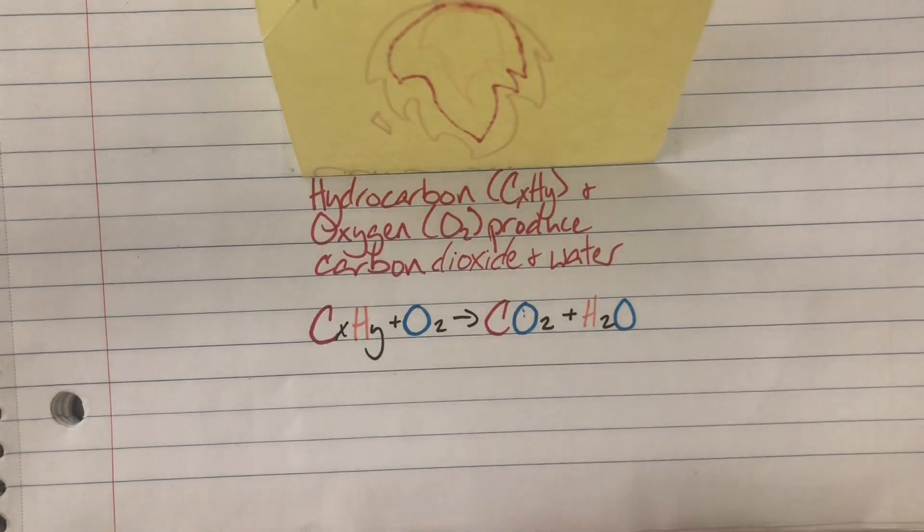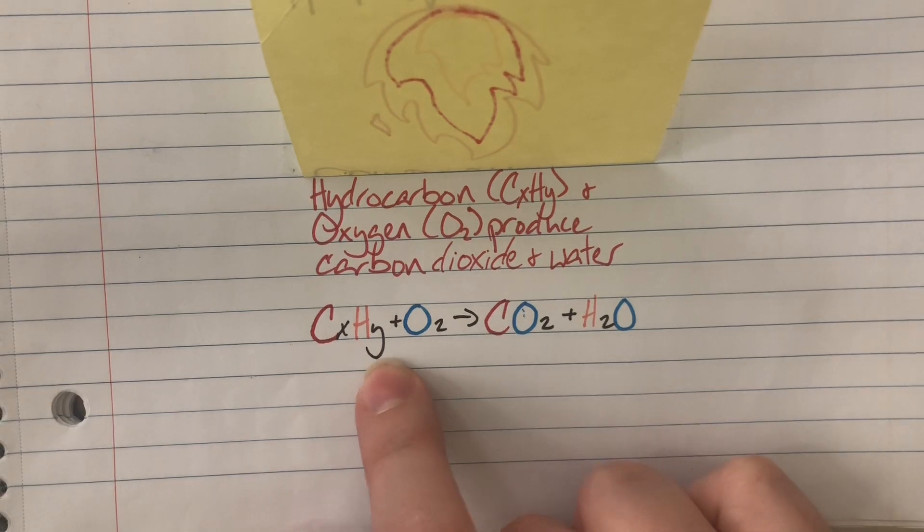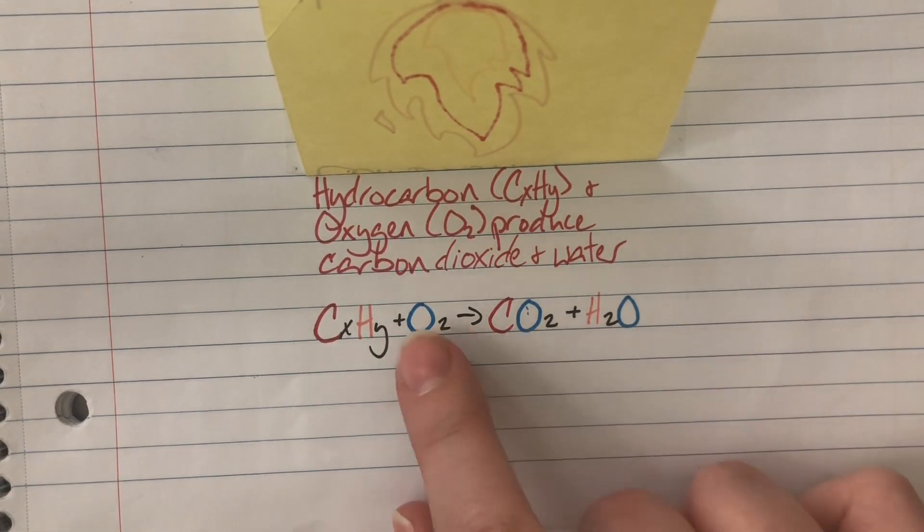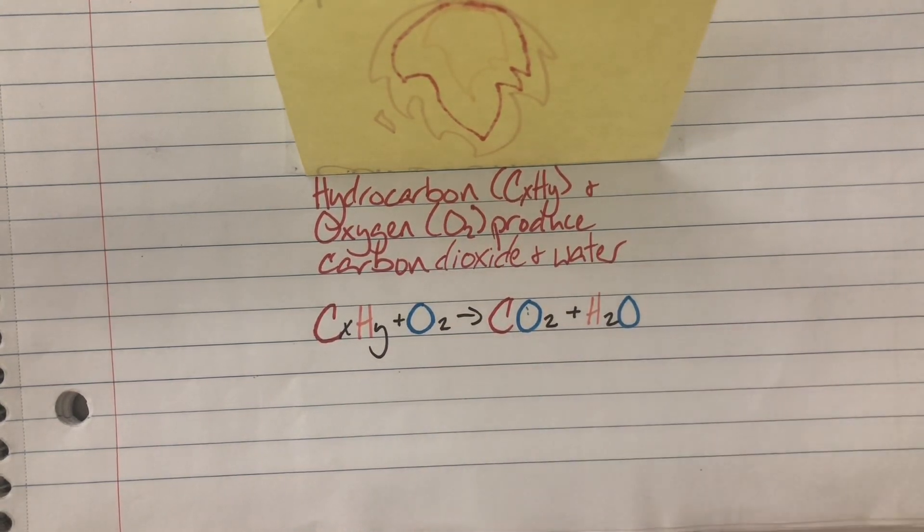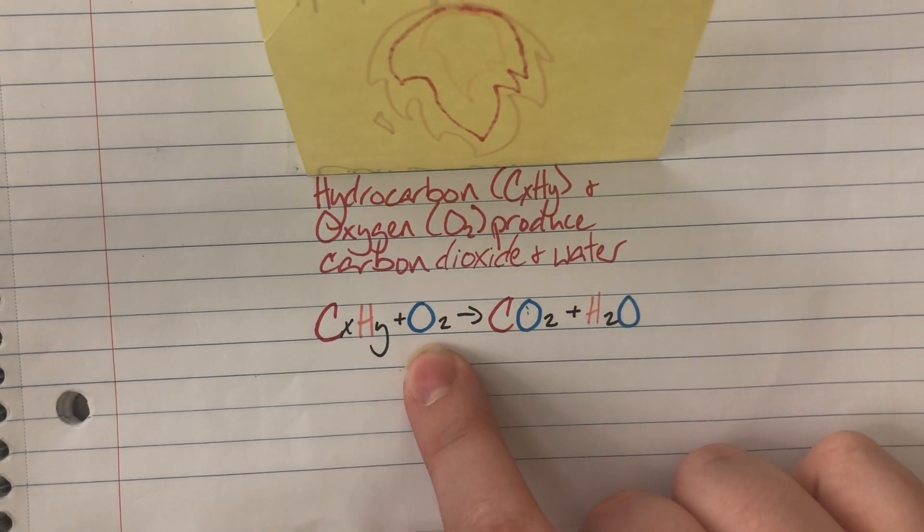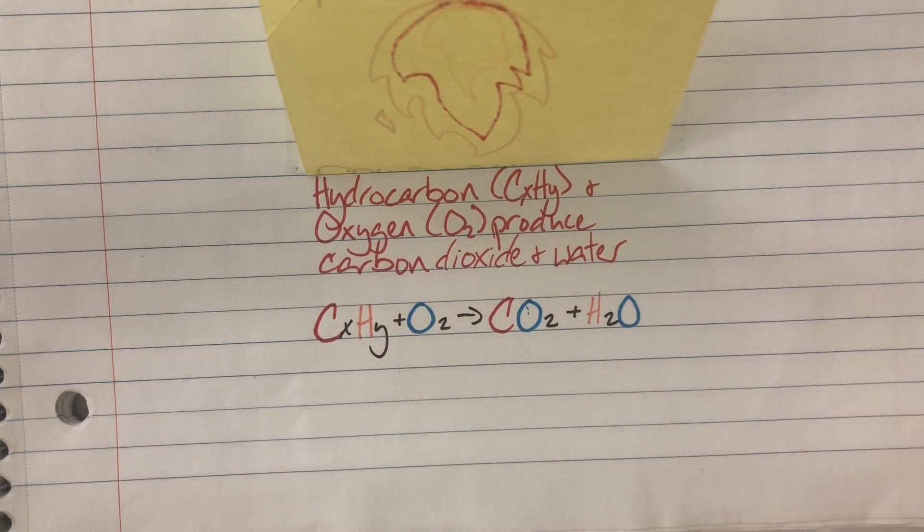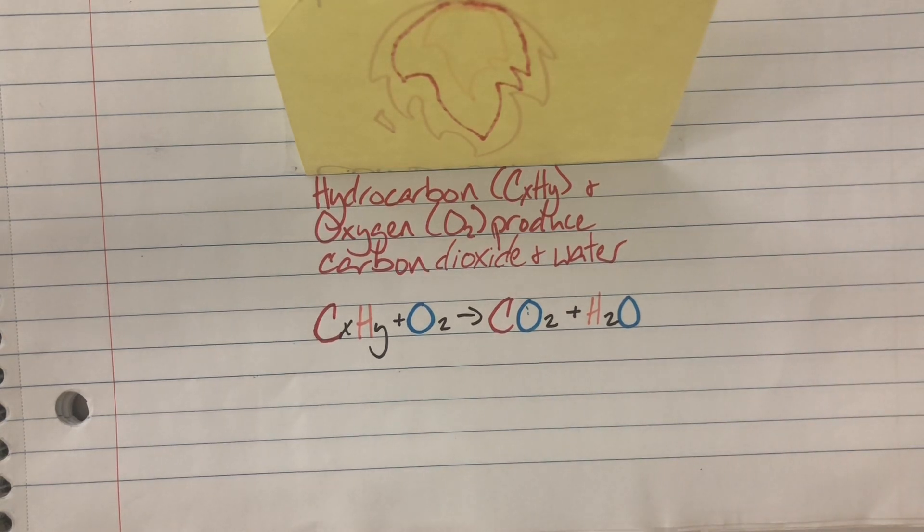My example reaction is a hydrocarbon C sub X H sub Y plus oxygen forming carbon dioxide and water. These three components must be the same every single time. If you do not see oxygen on the left hand side it cannot be a combustion reaction. If you do not see the products carbon dioxide and water it cannot be a combustion reaction. It is very prescriptive.